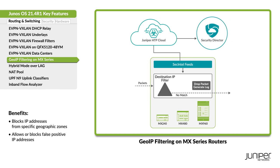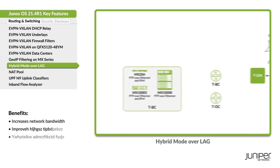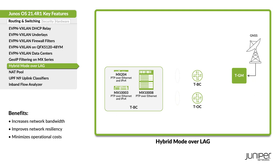Use GeoIP feeds fetched from Policy Enforcer to prevent the shown MX devices from communicating with specific IP addresses. Distribute precise clock synchronization over a packet switch network using SyncE and PTP.